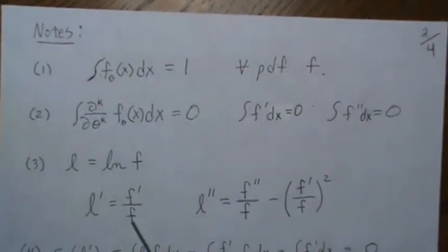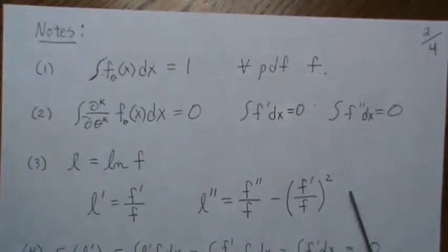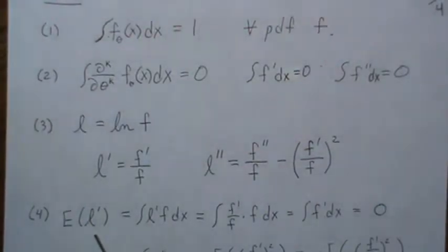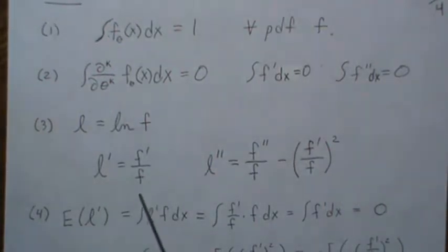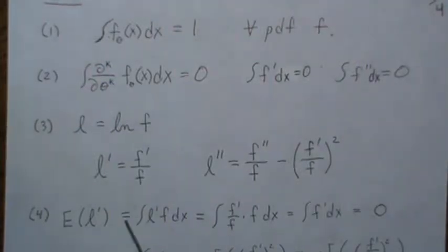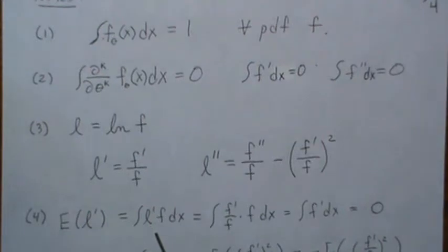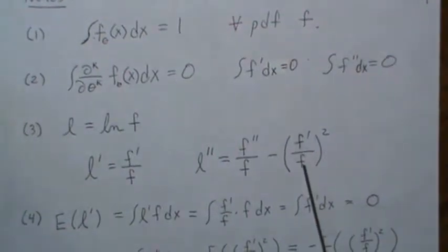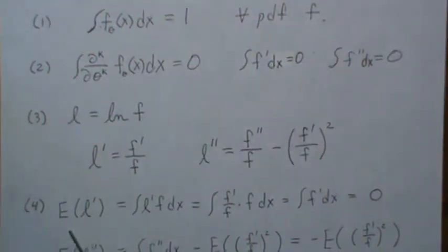Note that that second term looks like the score squared. Now let's take the expected value of our score. By the law of the unconscious statistician, you take it times the density and integrate over all possible values. But the score is F prime over F, so the F's cancel, leaving the integral of F prime dX, which we said was zero. So the expected value of the score is zero.